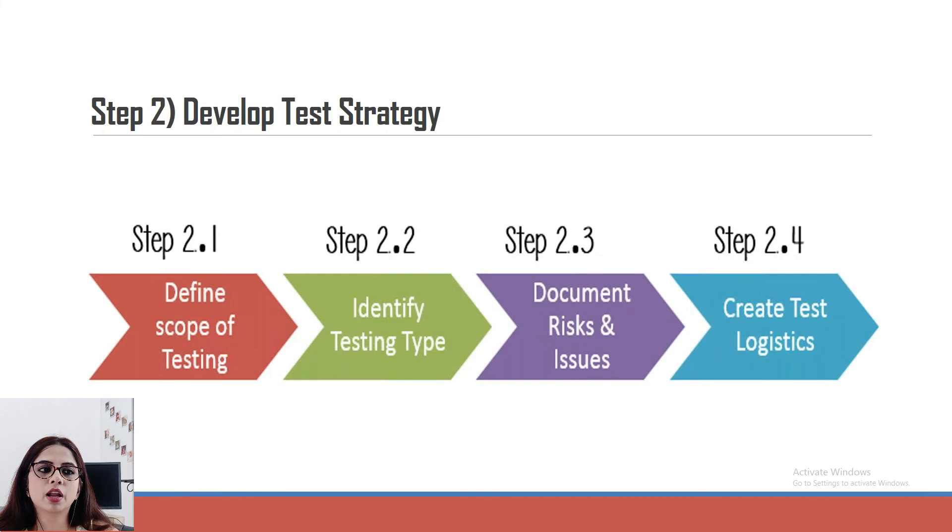Strategies - very important. For developing strategies, you have to know the scope. Let's say your project doesn't have scope for performance testing or security testing. You have to mention it clearly in the test plan that no, you're not going to do any security testing as a part of this test plan. So scope of testing is very important. Identifying testing type - which all testing methods you'll be using, you have to mention properly. You have to mention the risks as well.